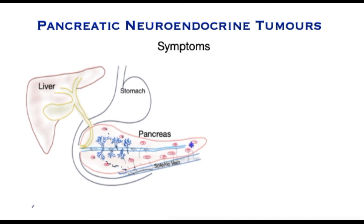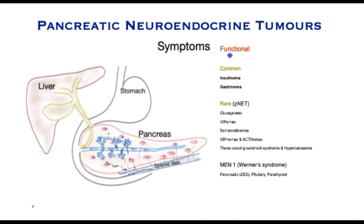Now that we know these tumours arise in tissue that produces hormones, let's see what symptoms pancreatic neuroendocrine tumours produce. There are essentially two varieties: those that are called functional, i.e. those that are active — these tumours are out of control and produce certain specific chemicals as well as forming a mass — and then those that do not produce any chemicals but are tumours nonetheless.